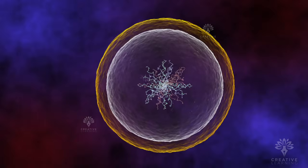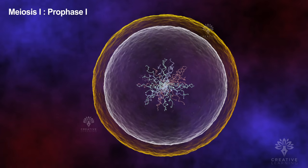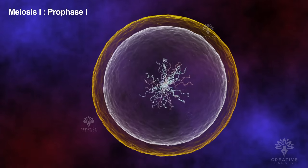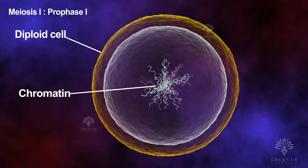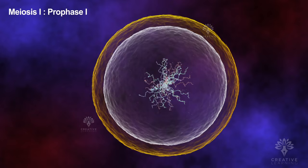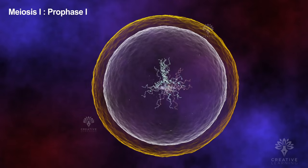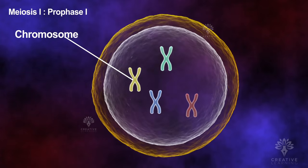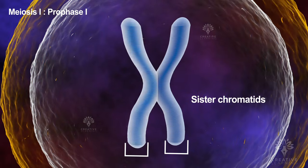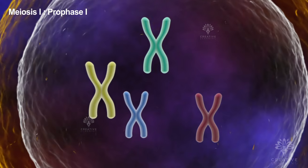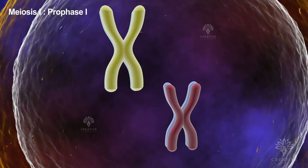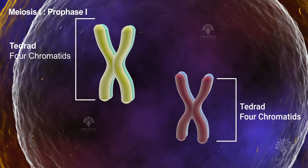Now let's focus on the first stage of meiosis, known as meiosis I. Prophase I commences with a diploid cell. Its chromatin contains two sets of chromosomes, one inherited from each parent. During this phase, the DNA in the chromatin replicates and condenses into recognizable X-shaped chromosomes and its identical sister chromatids. The chromosomes couple up with their corresponding counterparts in a fascinating process called synapsis, generating a tetrad made up of four sister chromatids.